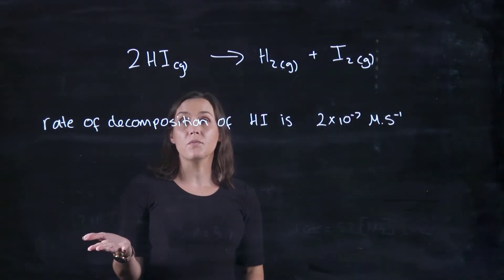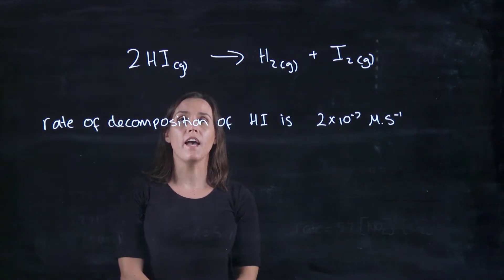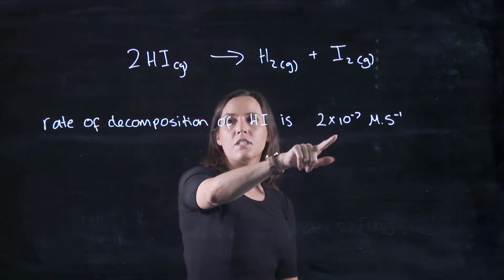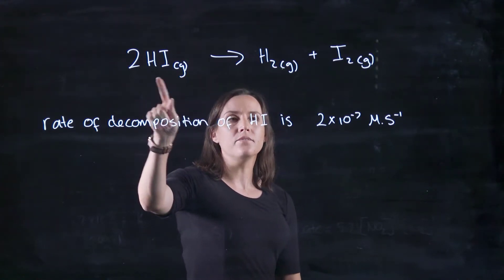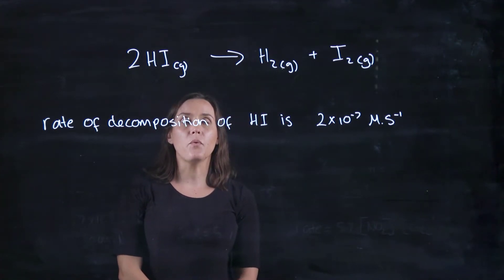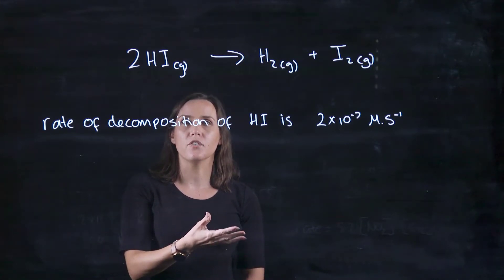Okay, so with this one here we've got this reaction: 2HI gas decomposing to produce H2 gas and I2 gas. Now we're given the rate of the decomposition of the HI, and this is 2 times 10 to the minus 7 moles per second, and we want to work out the rate of appearance of H2 and I2.